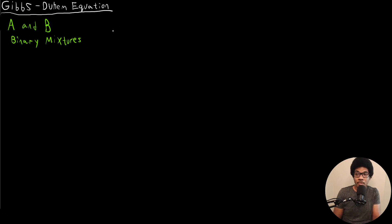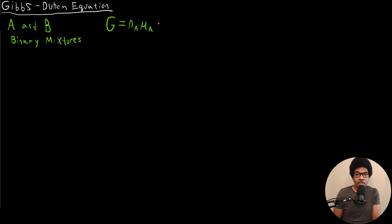So let's just deal with the two-component mixture. If we have a two-component mixture, we saw in the last video that we can actually express its total Gibbs free energy in the following way: G = N_A·μ_A + N_B·μ_B, where μ is the chemical potential.